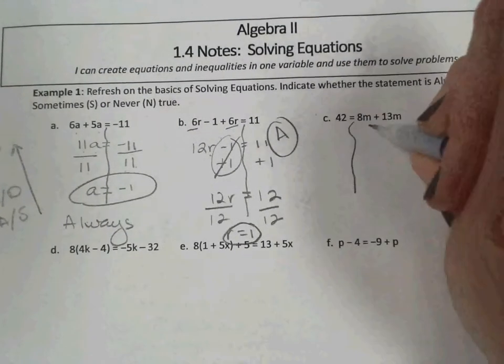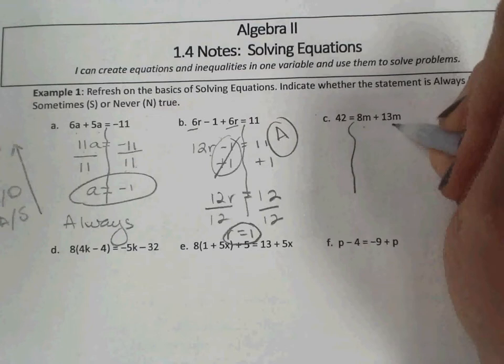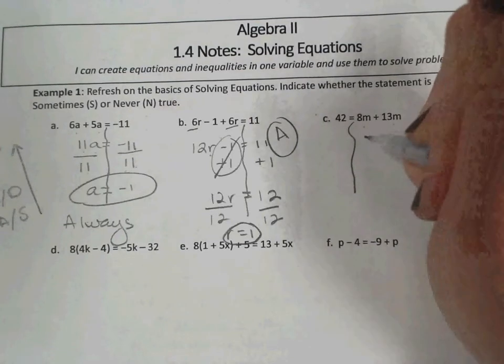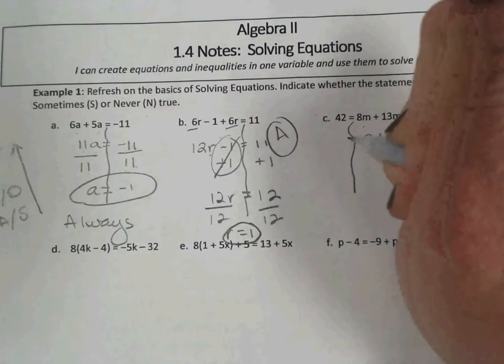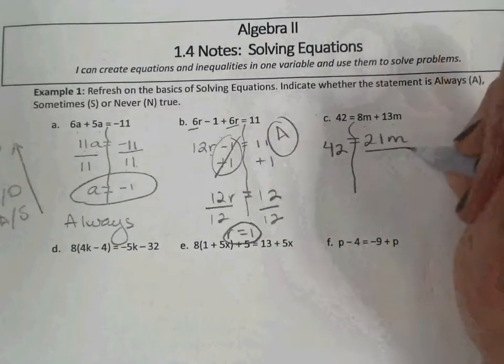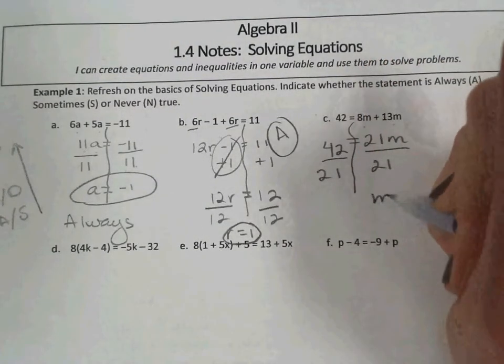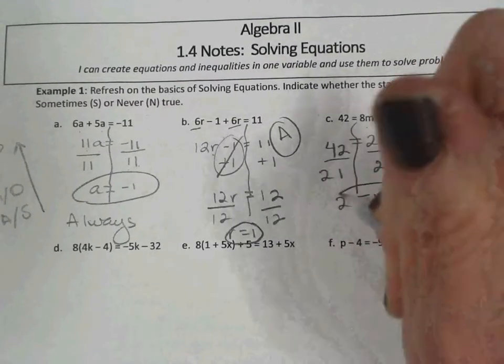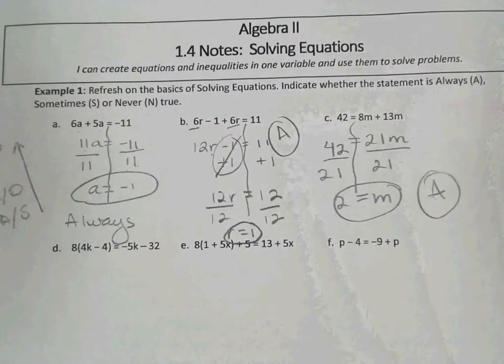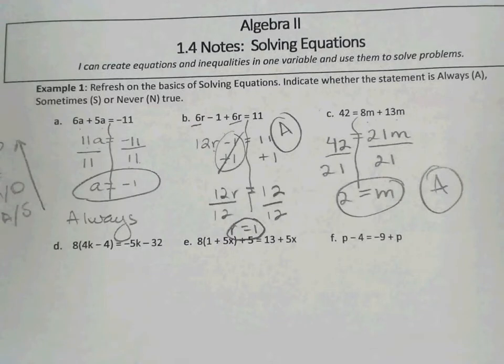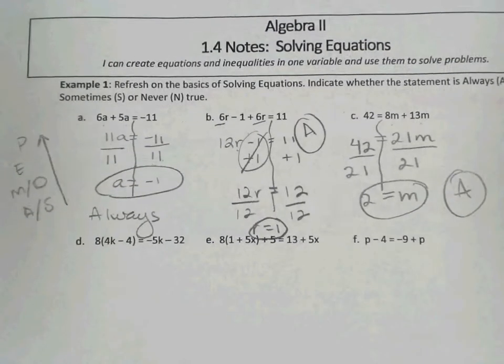Similarly in C, 8m and 13m combine our like terms. We get 21m equals 42. Divide both sides by 21. m equals 2. Again, this is always true. Anytime we get just one exact solution, then it will be always true.